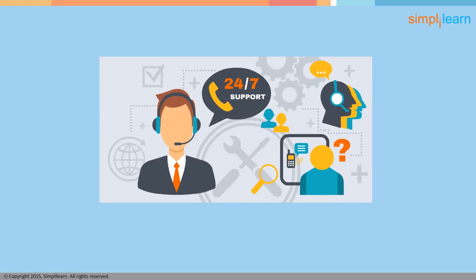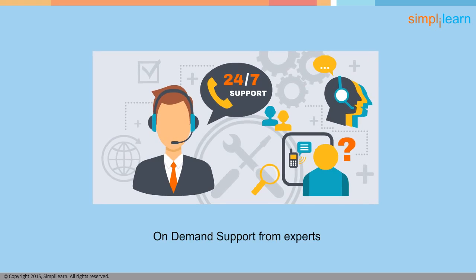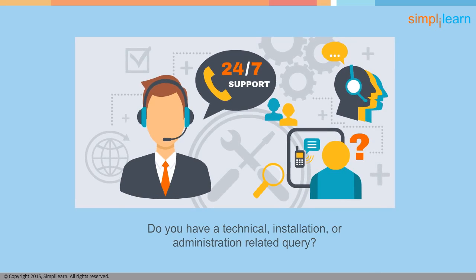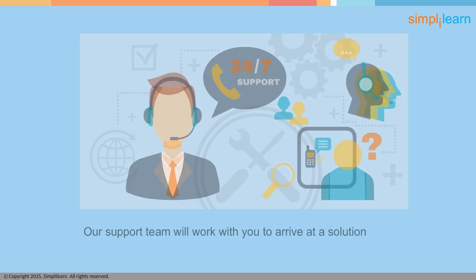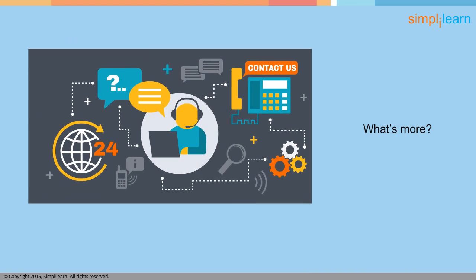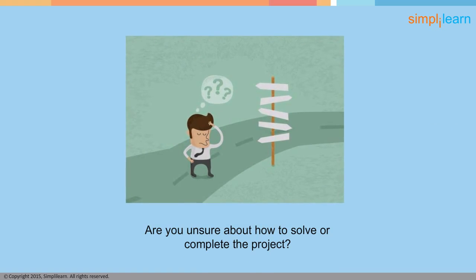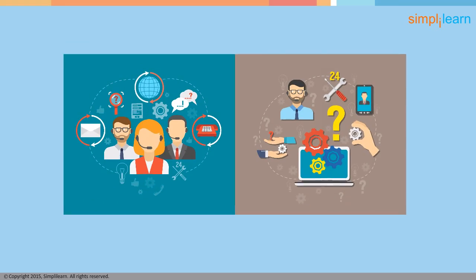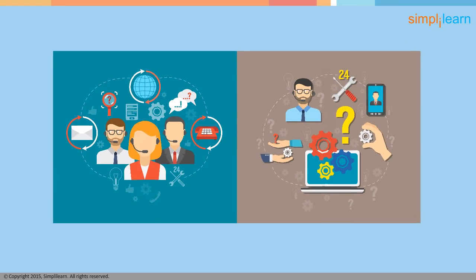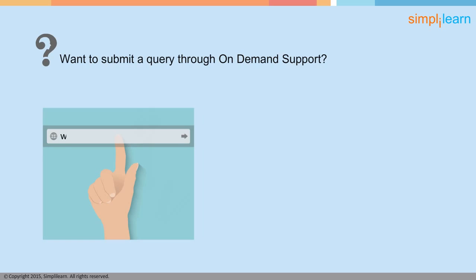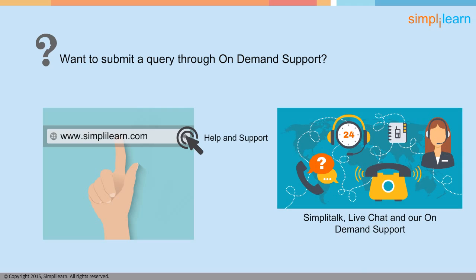SimpliLearn offers you on-demand support from experts for resolving any queries while pursuing the Tableau 9 Qualified Associate course. Do you have a technical, installation, or administration-related query? Our support team will work with you to arrive at a solution. What's more, in case of critical issues, support will be rendered through remote desktop. If you are unsure about how to solve or complete the project, or stuck on a task, our on-demand support team will guide you through the programming in projects and case studies of the course. To submit a query, just go to www.simplylearn.com and click Help and Support at the bottom of the page. You also have the option of SimplyTalk and live chat, and our on-demand support will resolve the query within 48 hours.